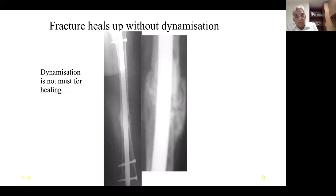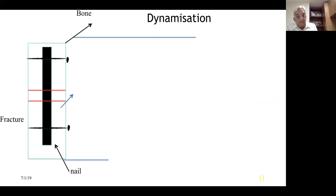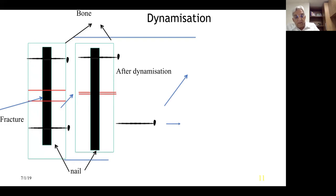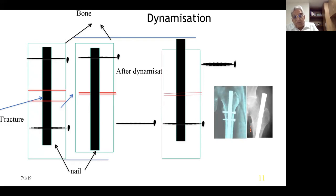How dynamization is done: the fracture is separated and there are screws in a static mode on both sides. When we dynamize by taking out the screw from the lower end, the fracture collapses and the nail has to travel down. Unless there is space for the nail to travel down, dynamization cannot be executed. Similarly, when dynamizing at the proximal end, the nail has to go up. In a badly comminuted fracture, this is going to give rise to shortening.